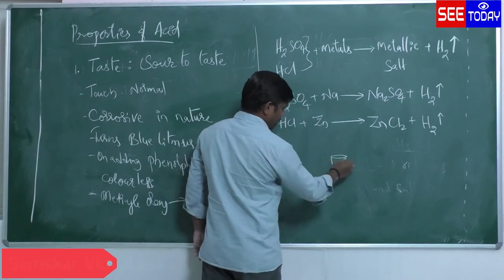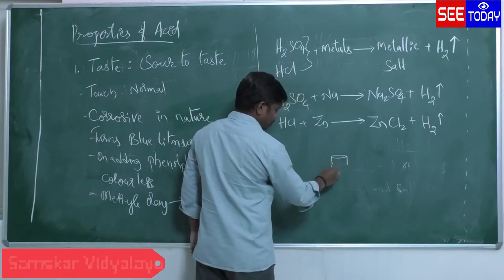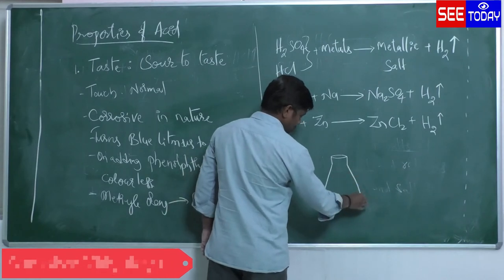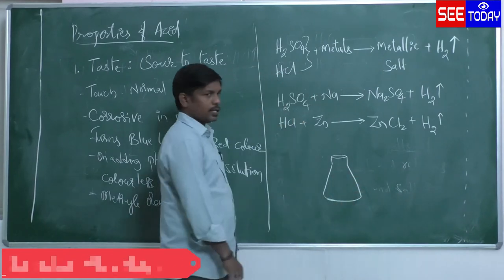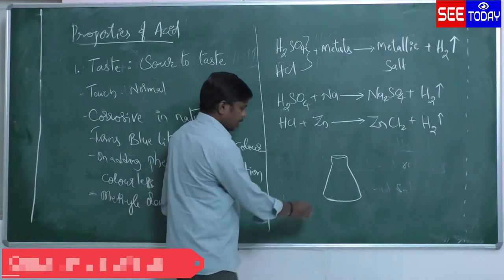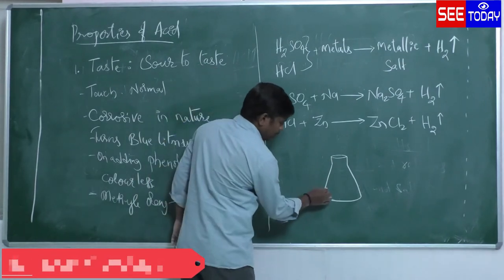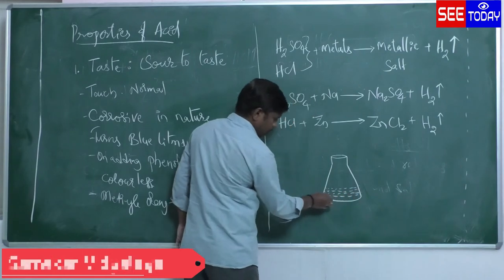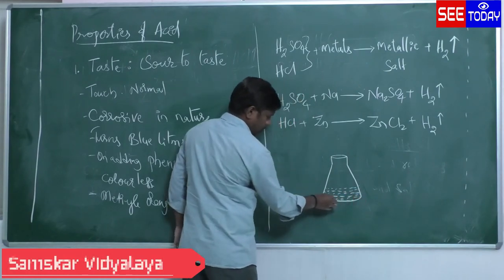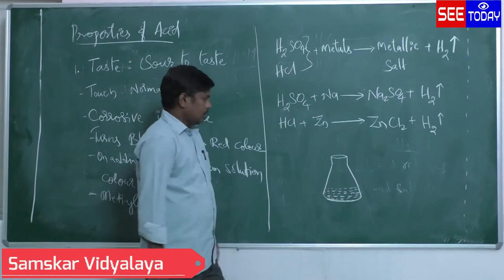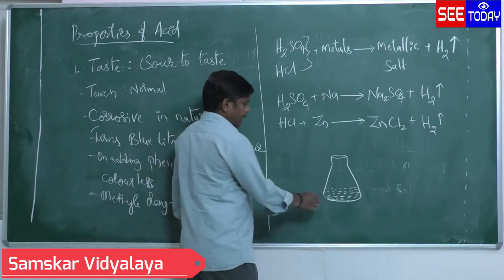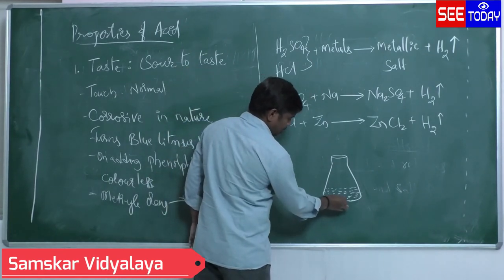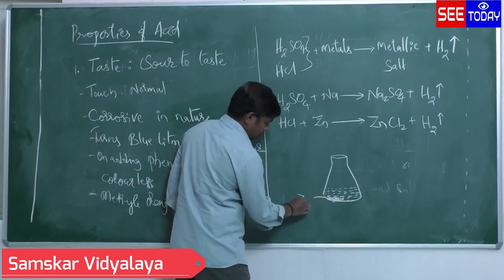For example, if we take H₂SO₄ and add sodium metal, the sodium replaces hydrogen to form sodium sulfate (a salt) and releases hydrogen gas. Similarly, if you take HCl and add zinc metal, you get ZnCl₂ and hydrogen gas is released.